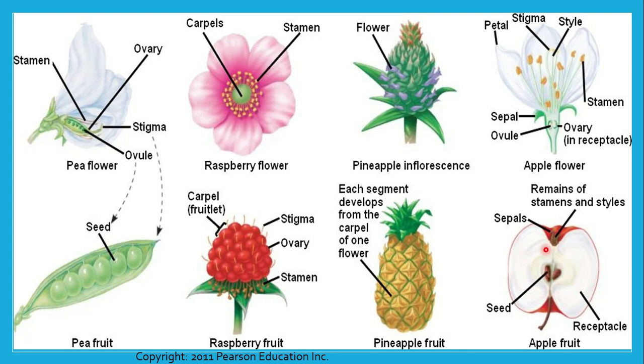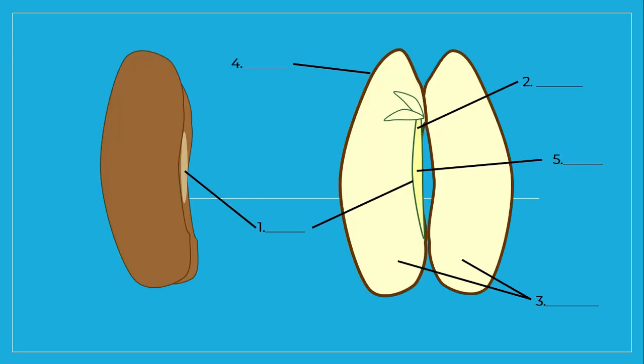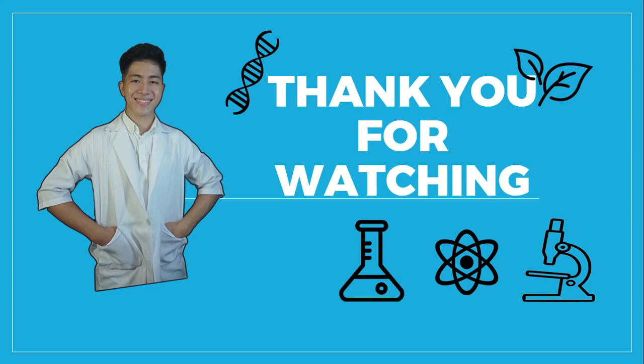Before we end, let's label the missing parts of our seed, which is the dicot seed. Write your answers in the comment box. And to end our discussion for today, I hope we learned about seed germination and seedling development, the parts of a seed — monocot and dicot — and fruit form and function. Always remember: science is life and science for all. Thank you for watching.